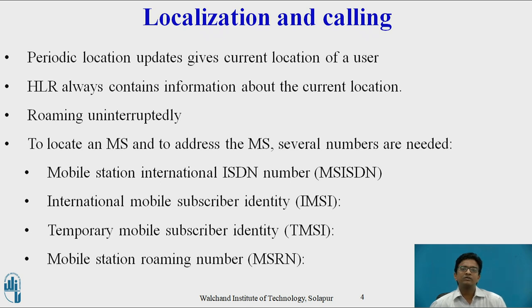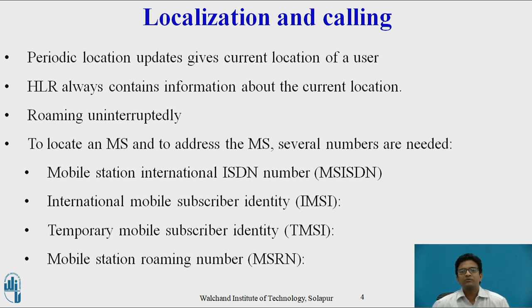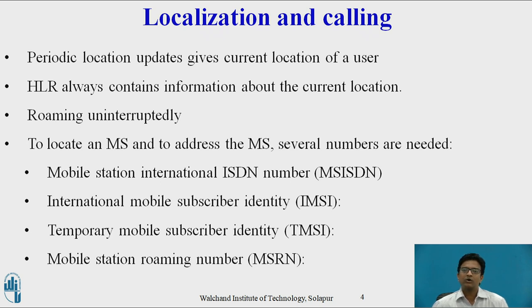In localization and calling, GSM performs periodic location update. Even if a user doesn't use the mobile station, the GSM system always knows the current location of a user because of his phone number, which is valid worldwide. GSM uses two types of databases: Home Location Register (HLR) and Visitor Location Register (VLR). HLR always contains information about the current location. Whenever a mobile station moves into the range of a new VLR, the HLR sends all user data needed for the new VLR. Changing VLR with uninterrupted availability of all services is called roaming.